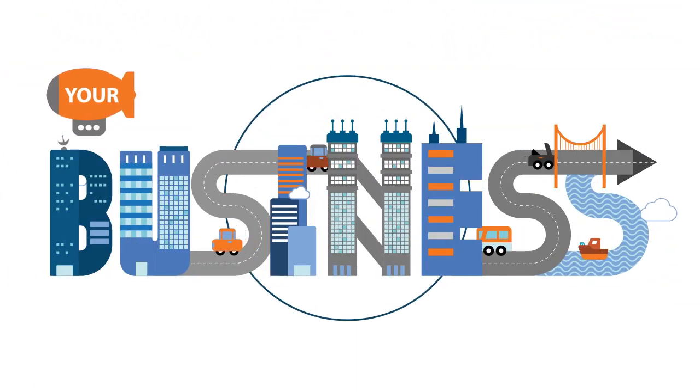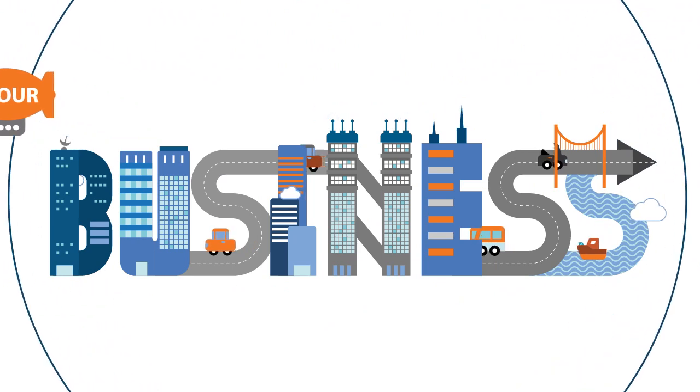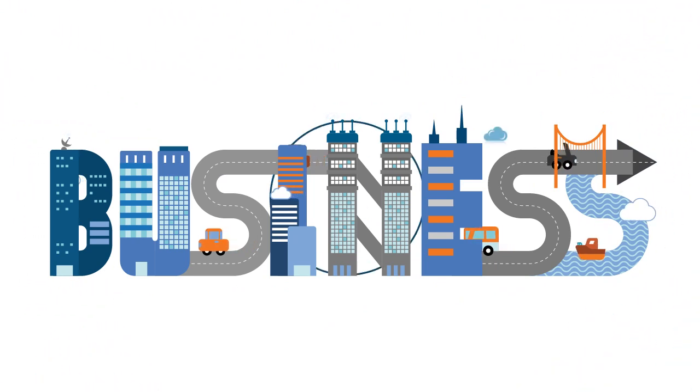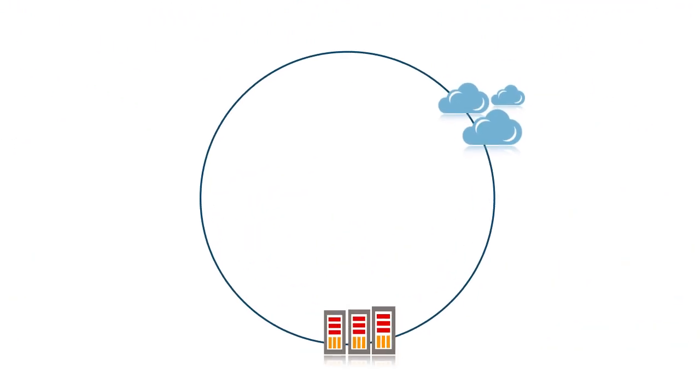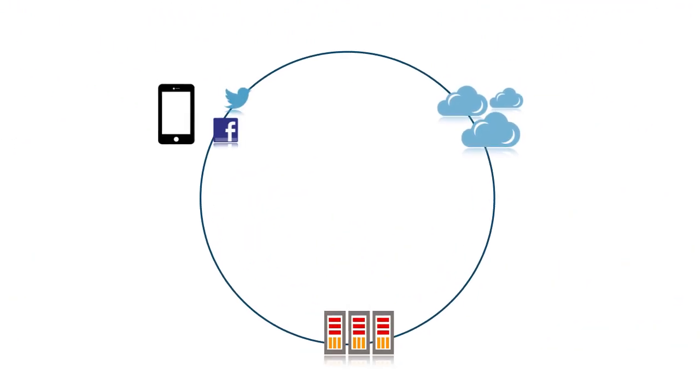Your business is moving faster than ever, which means you need a modern, agile architecture that includes cloud, social, mobile, and on-premise applications.